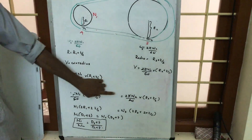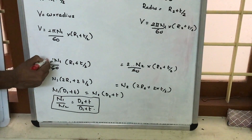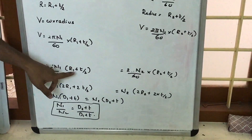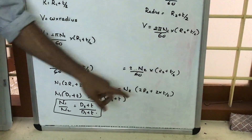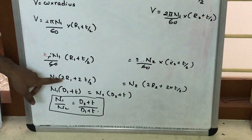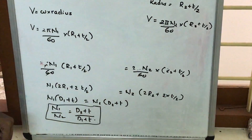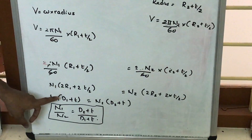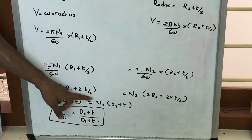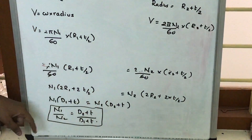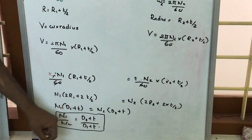Equating the two velocities: the 2π terms cancel, and taking the factor of 2 inside the brackets gives n1·(2r1 + t) = n2·(2r2 + t). Since 2r = diameter d, this simplifies to n1·(d1 + t) = n2·(d2 + t), from which n1/n2 = (d2 + t)/(d1 + t).